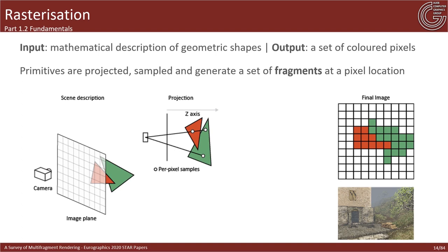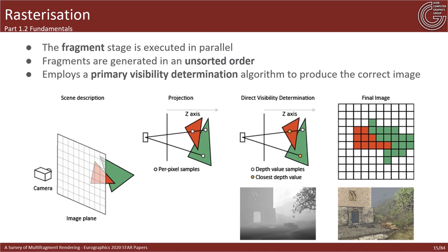In its simplest form, the rasterization process receives as input a mathematical description of geometric shapes and outputs a raster or rectangular grid of color pixels. Primitives are projected to the image plate, sampled usually at a fixed spatial rate, and generate a set of fragments at a specific pixel location. Importantly, the fragment generation stage is executed in parallel, meaning fragments are generated in an unsorted order, requiring a visibility determination algorithm to produce a correct image.